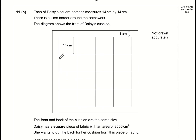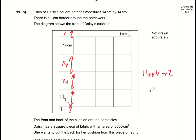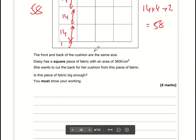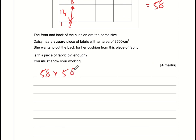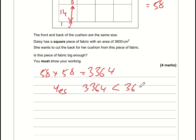Part 11b: work out the total area of the cushion. It's 14 + 14 + 14 + 14 + 1 + 1, so 14 × 4 + 2 = 58. The cushion is 58 by 58 cm, so the area is 58 × 58 = 3364 cm². The fabric has an area of 3600 cm², and since 3364 < 3600, the fabric is big enough — yes.